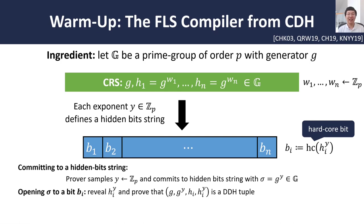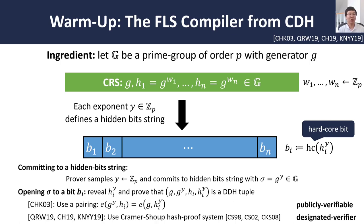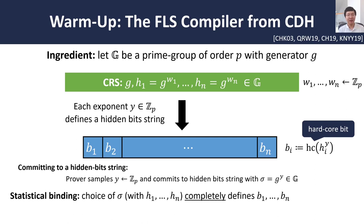What remains to show is that the prover used a common exponent y to construct both the commitment and its opening. This is exactly proving that the tuple (g, g^y, hᵢ, hᵢ^y) constitutes a DDH tuple. There are several ways of proving that a particular tuple is a valid DDH tuple. One way is to use a pairing — this is the approach taken by Kinetty, Halevy, and Katz, which gives a publicly verifiable construction. In the Eurocrypt papers from last year, they used a Cramer-Shoup hash proof system to prove that this tuple is indeed a DDH tuple, giving a designated verifier instantiation. Moreover, this construction is statistically binding: the choice of commitment g^y completely determines y, and therefore the entire sequence of hidden bits, meaning the resulting NIZK also satisfies statistical soundness.